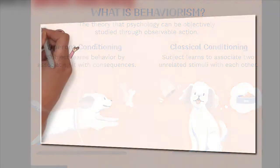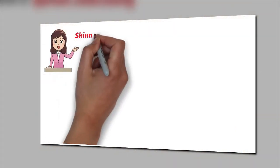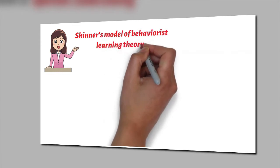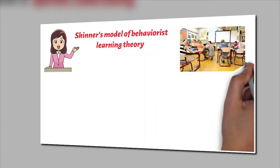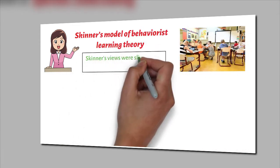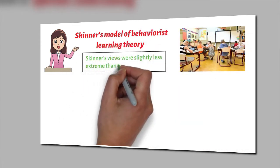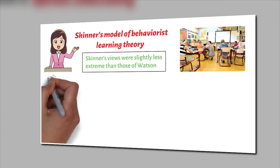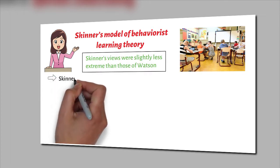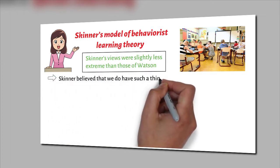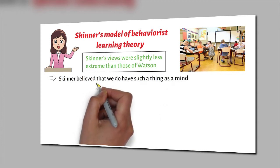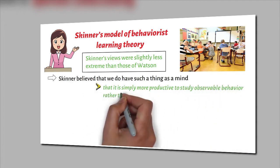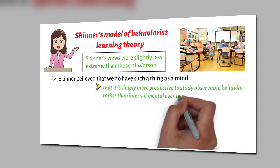It must be noted that Skinner's views were slightly less extreme than those of Watson. In fact, Skinner believed that we do have such a thing as a mind, but that it is simply more productive to study observable behaviour rather than internal mental events.